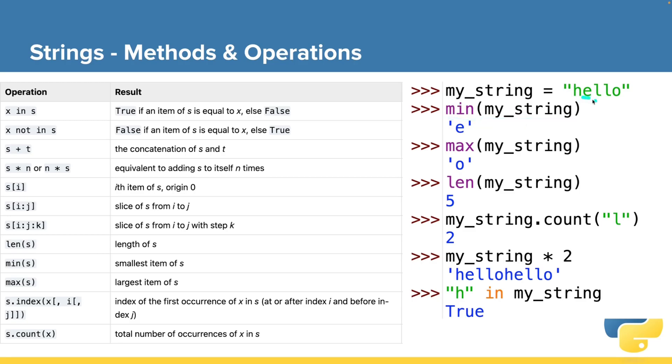E is the lowest, if you will, value in the alphabet of that string. The max value in that string hello is O.